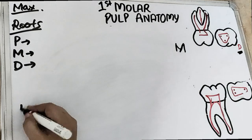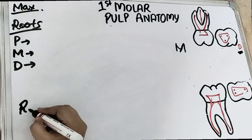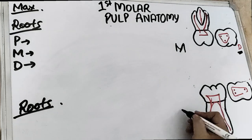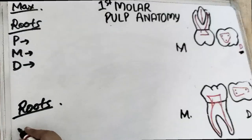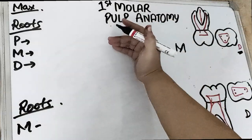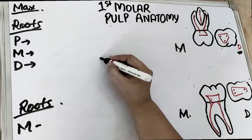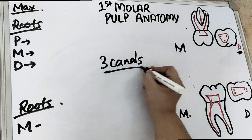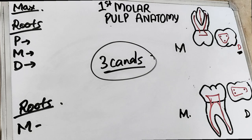For the mandibular, all molars have only two roots normally — one mesial and one distal. Now, both of the molars — maxillary as well as mandibular — normally have three canals. So the roots are different but the canal count remains the same for both molars.